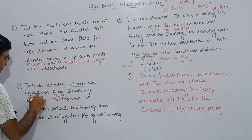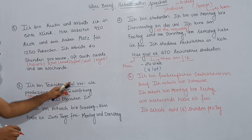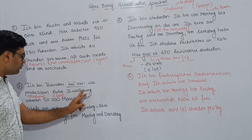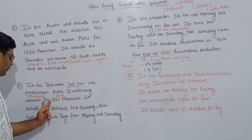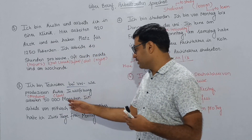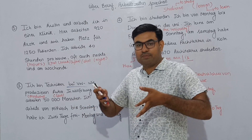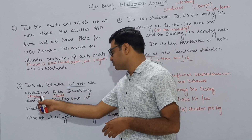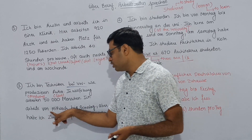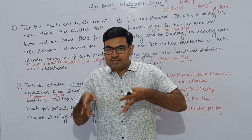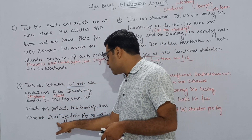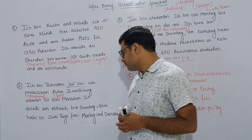'Ich bin Techniker bei VW' means I am a technician in this particular company. 'Wir produzieren hier Autos' — Autos means cars in German. We are producing cars. Volkswagen produces cars. 'In Wolfsburg' — in Wolfsburg. Volkswagen produces cars in Wolfsburg.